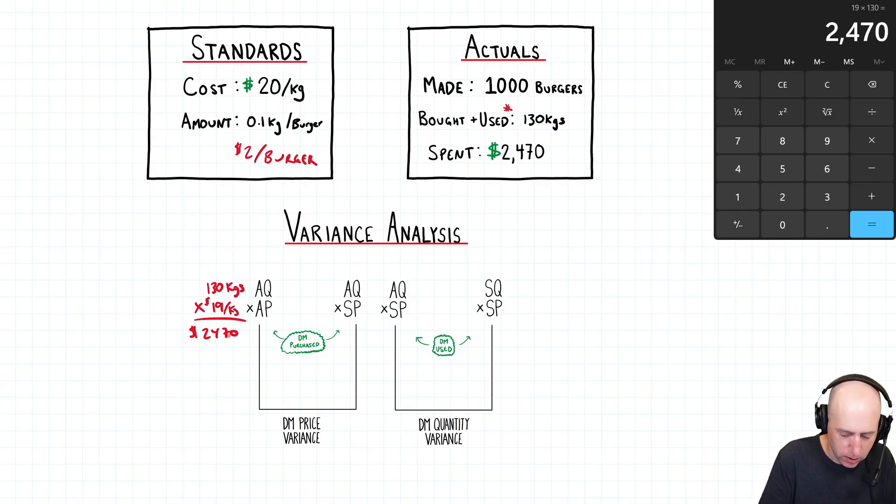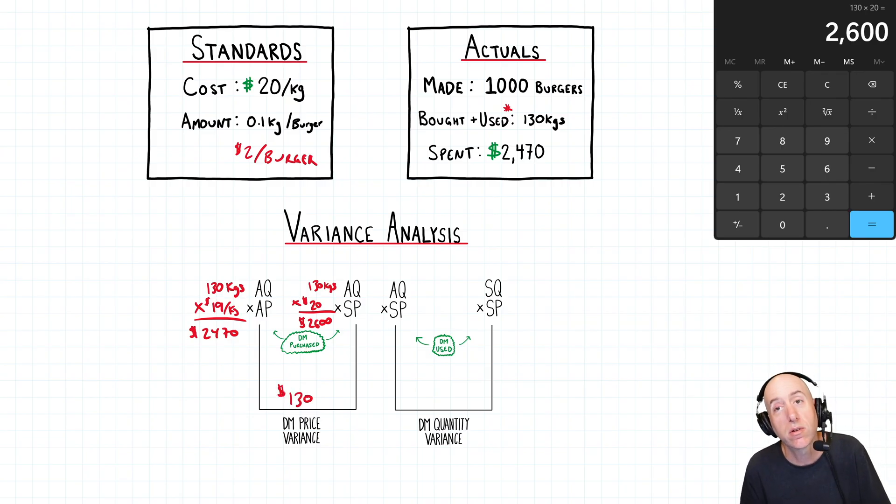So the left prong is the amount you spent on your material. AQ SP. So, again, AQ is the actual quantity of materials purchased. And that was 130 kilograms. SP is the standard price per kilogram. Well, the standard price per kilogram is twenty dollars a kilogram. So, AQ times SP, 130 times 20 is twenty six hundred dollars. But I'll just make sure in my calculator it is indeed twenty six hundred. So, we've got a variance here. The difference between this left prong and this kind of middle prong, that is a variance. And the variance is one hundred thirty dollars.